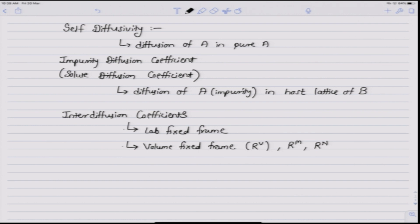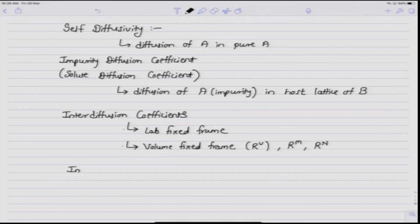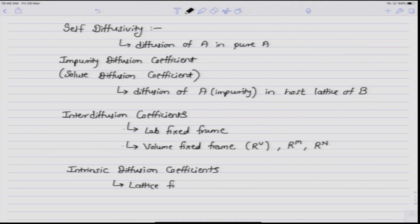We can also determine the flux with respect to a frame of reference fixed to a particular lattice plane. This is referred to as intrinsic diffusion, and the diffusion coefficients evaluated with respect to the lattice-fixed frame are called intrinsic diffusion coefficients. This is also known as the Kirkendall frame of reference. These are the various types of diffusion coefficients that we typically encounter.